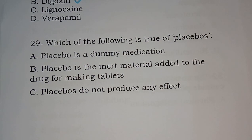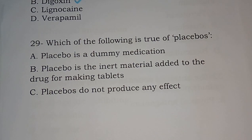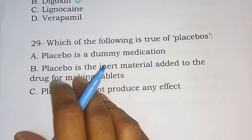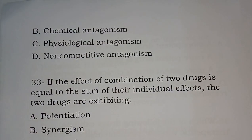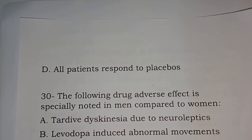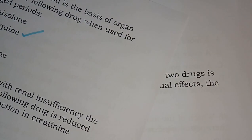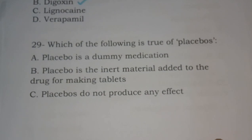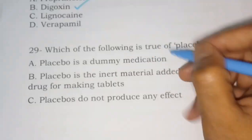Question 29: Which of the following is true of placebos? Option A: a placebo is a dummy medication. Option B: a placebo is the inert material added to drug for making tablets. Option C: placebos do not produce any effect. Option D: all patients respond to placebos. The correct answer is option A, a placebo is a dummy medication.